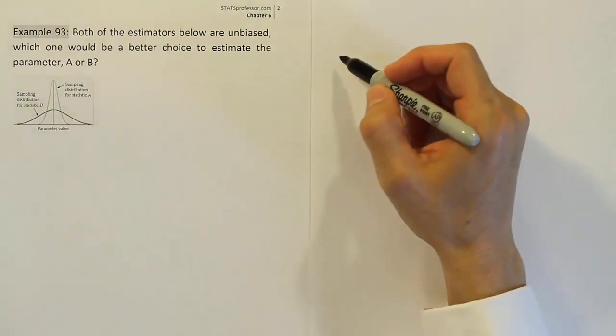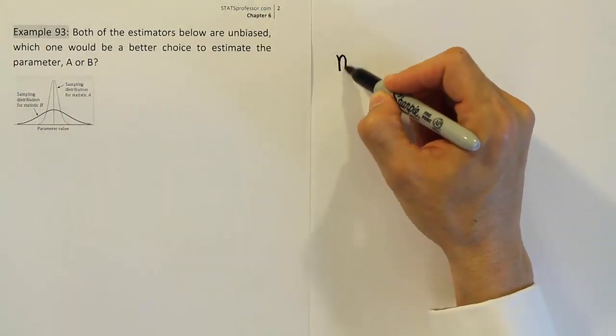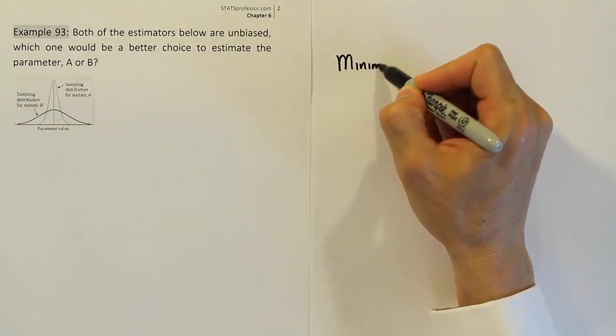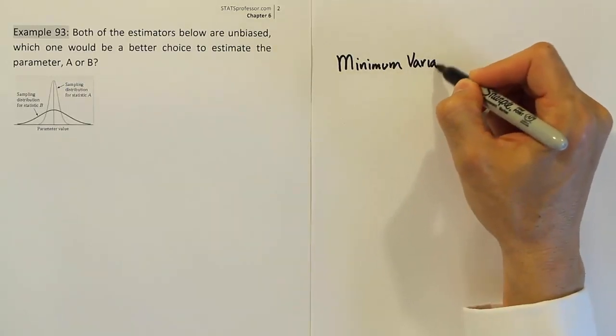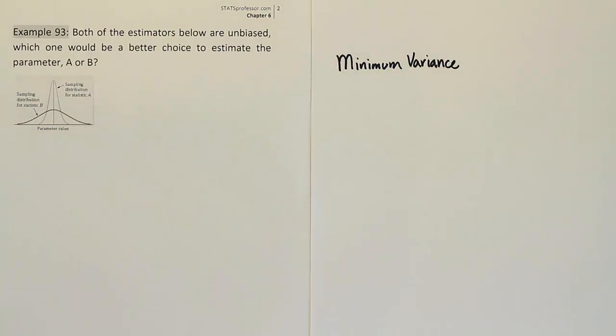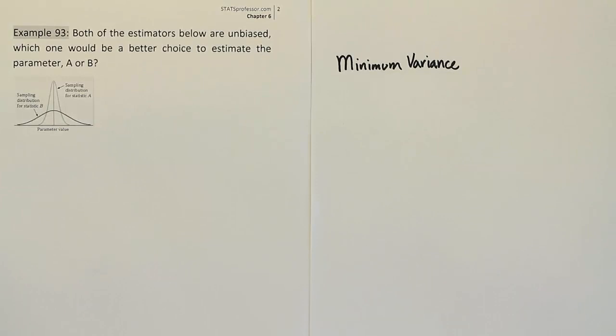What we're looking for when we find an estimator is we want one that has minimum variance. In other words, the least variance possible. We want to try to find the estimator with the smallest possible variance. Of course, obviously the smallest possible variance is zero. We don't mean smallest theoretically. We mean, is there an estimator with a smaller variance possible? If there is, we want that estimator as our choice.